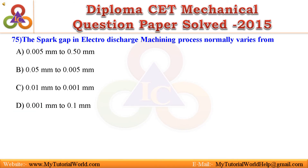Question 75. The spark gap in electro-discharge machining process normally varies from: A. 0.005mm to 0.50mm, B. 0.05mm to 0.005mm, C. 0.01mm to 0.001mm, D. 0.001mm to 0.01mm. Answer is 0.005mm to 0.50mm.